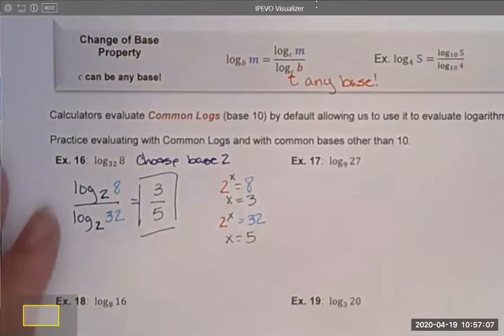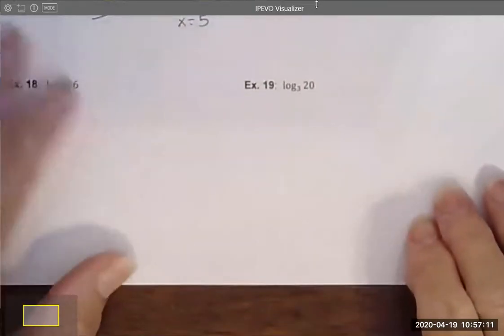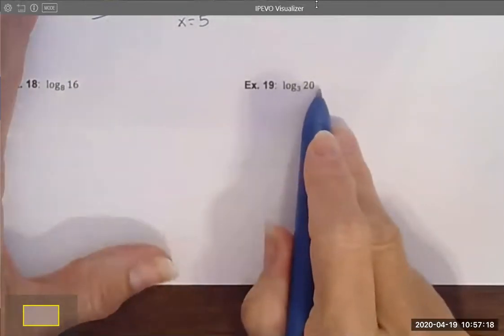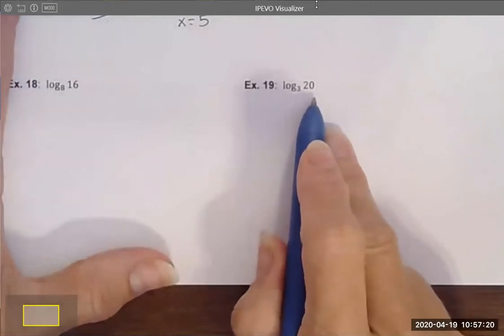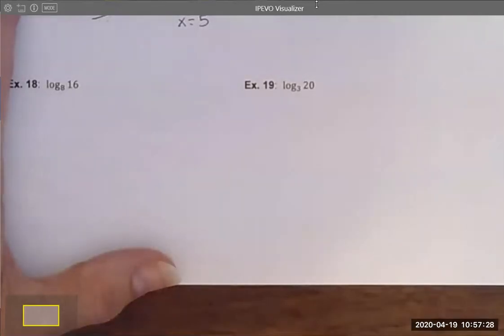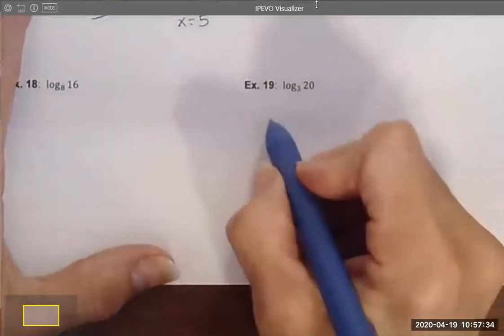What I'd like to do next is look at example 19. I'm going to shimmy this up just a wee bit. I'm choosing to look at this one because I want to write this one as a common log. 3 and 20 are not powers of a similar number. So I don't really immediately know how to write this as a division statement with a common log that's going to help me a lot. So I'm going to rewrite it using common log.